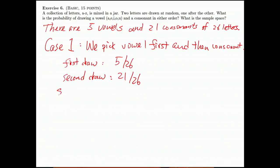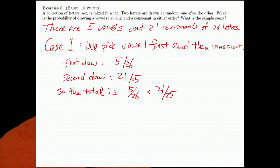So the total is 5 over 26 times 21 over 26. Oh, sorry. Here's 25. Because we have already picked one vowel and there are only 25 letters in the jar.